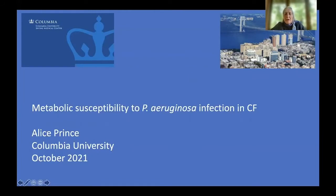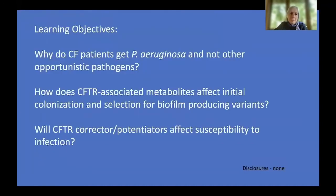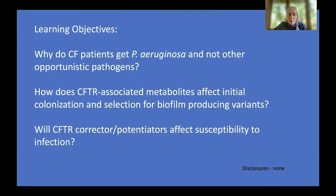Good morning. I want to thank the organizers for inviting me to speak about our interest in metabolic susceptibility to Pseudomonas aeruginosa infection in cystic fibrosis. The learning objectives are to understand why CF patients get Pseudomonas aeruginosa and not other opportunistic pathogens like E. coli or Klebsiella; how CFTR-associated metabolites affect initial colonization and selection for biofilm-producing Pseudomonas variants; what the CF-specific microenvironment is; and whether CFTR correctors and potentiators affect susceptibility to infection by changing this metabolic milieu.